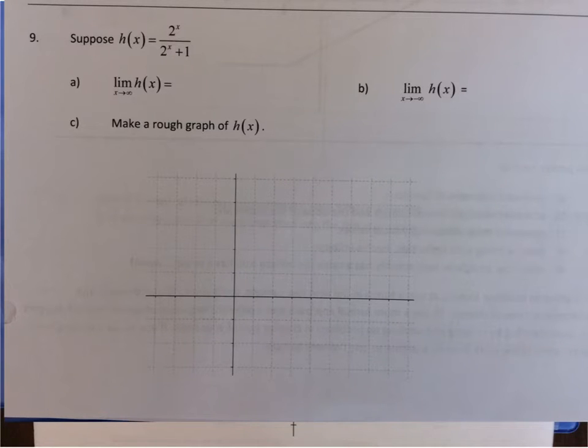First part, in part a, it says the limit as x approaches infinity of h(x). The way to consider this problem is we could think about the fact that out at infinity, adding one just doesn't matter because infinity is so big that adding one to it is not going to matter whatsoever.